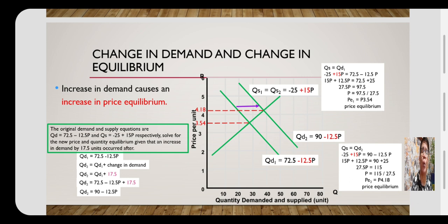Because we have an increase in demand by 17.5, the change in demand is +17.5. Adding 17.5 to the original demand equation gives us the new demand equation: Qd2 = Qd1 + 17.5. Therefore Qd2 = (72.5 − 12.5P) + 17.5, which simplifies to Qd2 = 90 − 12.5P.